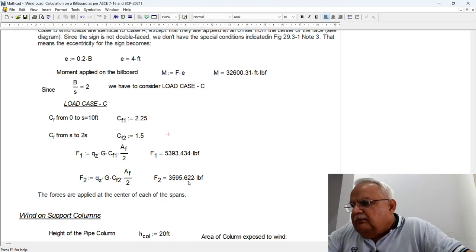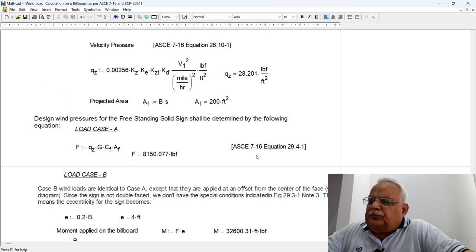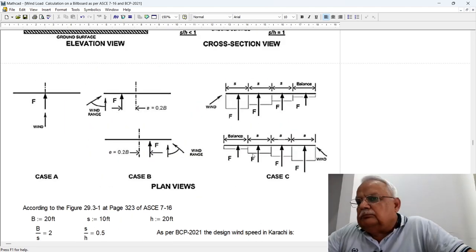So for both the cases, we have calculated the forces. So F1 comes out to be 53.93 and F2 comes out to be 35.95. So these two forces should be applied as per the figure shown over here, so assuming that this billboard is only up to here, so we have to apply these two forces over here.